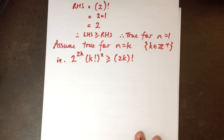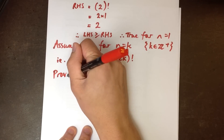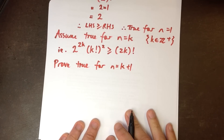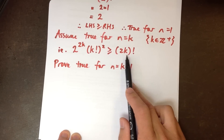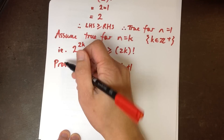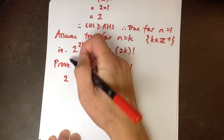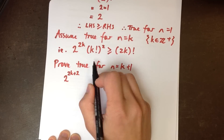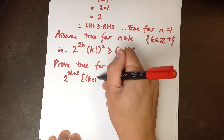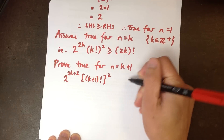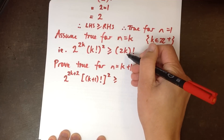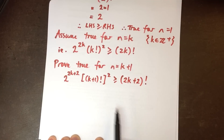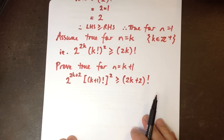The third step — the real important step — is that I now want to, on the basis of that assumption, prove that the statement is true for the next value along, k plus 1. When I replace all the k's with k plus 1, I'm going to have 2 to the power of 2k plus 2, then k plus 1 factorial all squared. I want to show that's greater than or equal to 2k plus 2 factorial.